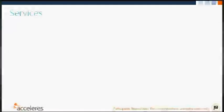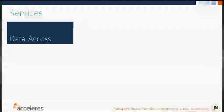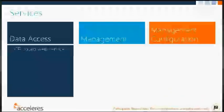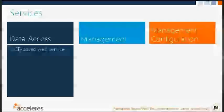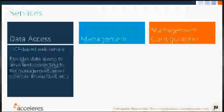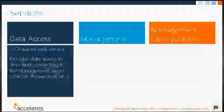There are three key services: the data access service, the management service, and the management configuration service. The data access service is arguably the most important — it's a Windows Communication Foundation-based web service responsible for managing authentication and data access between any client connecting to Service Manager and the management server. Clients include the console, PowerShell scripts, and data warehouse ETL jobs. If this service is down, nobody will be able to access Service Manager in any way.